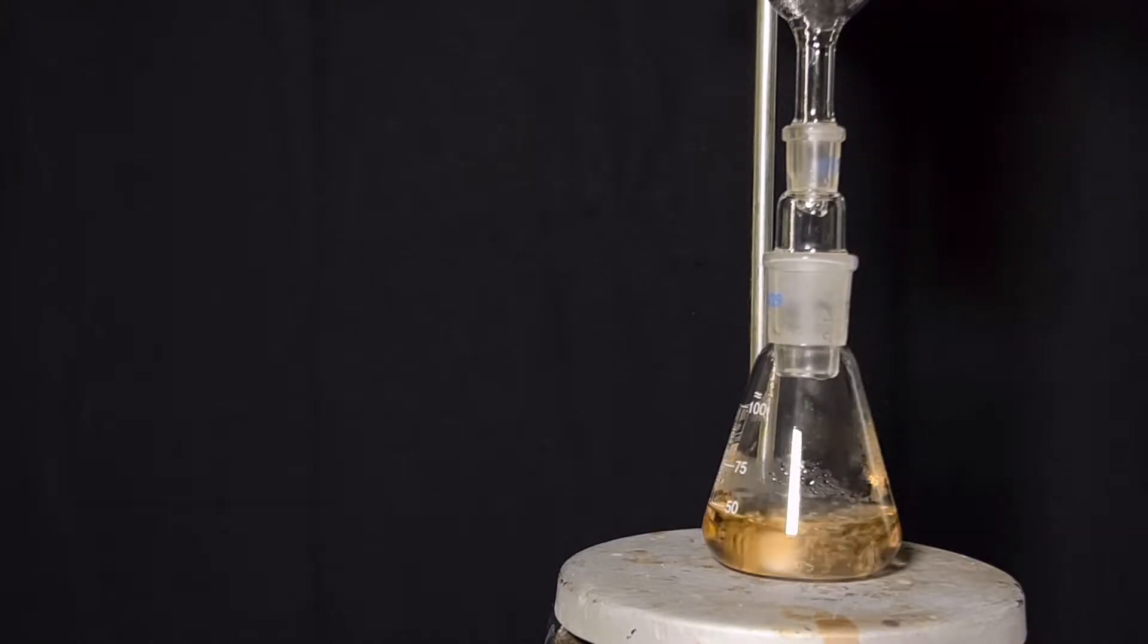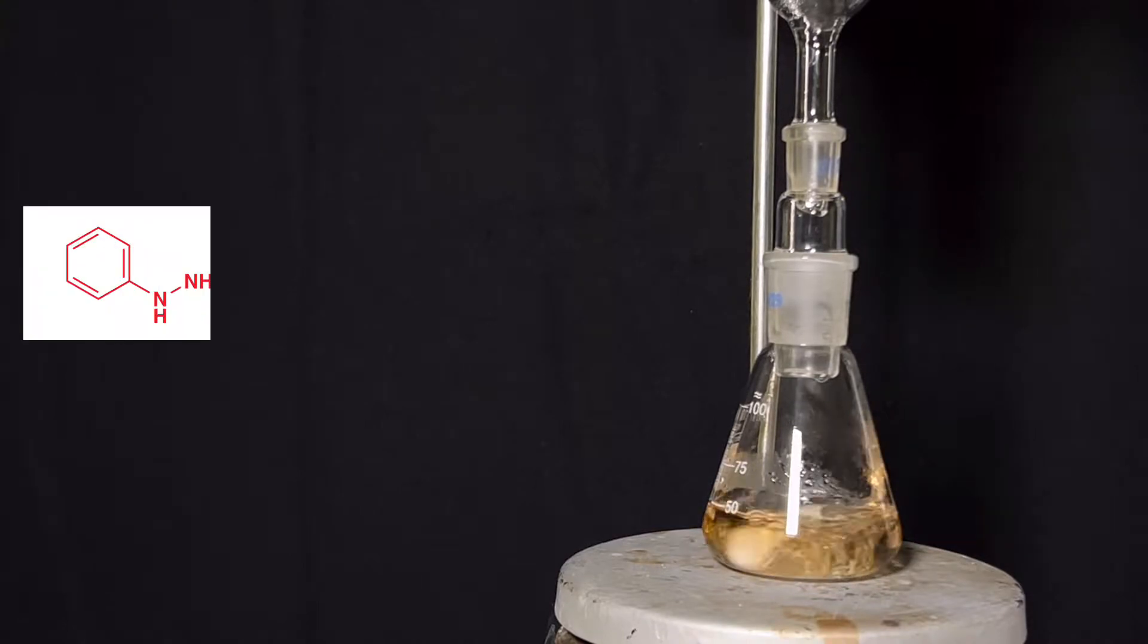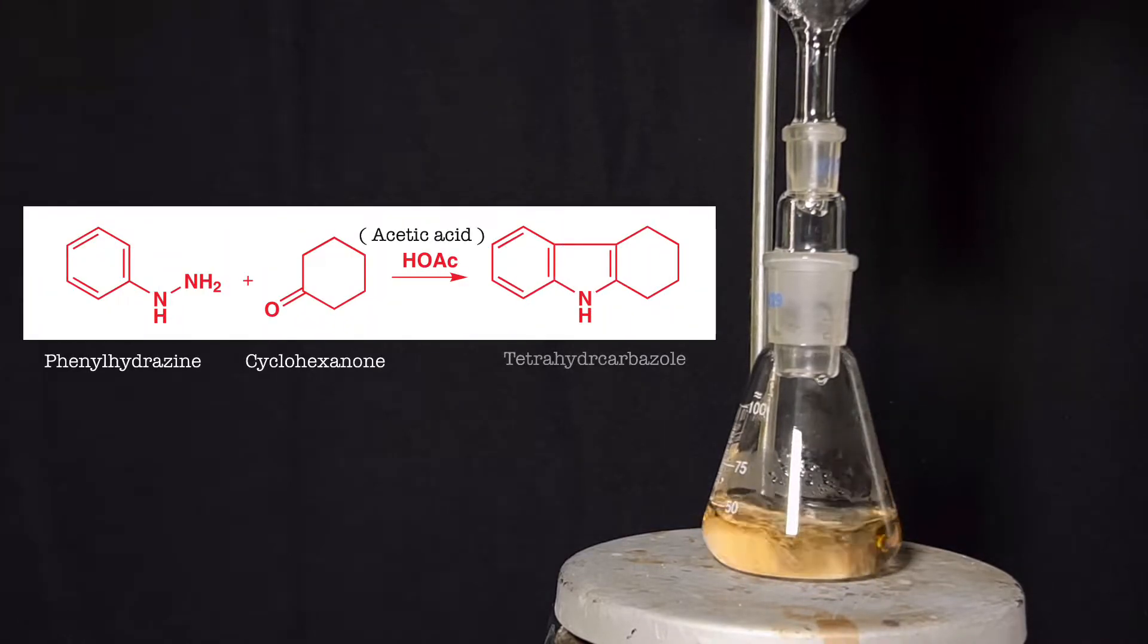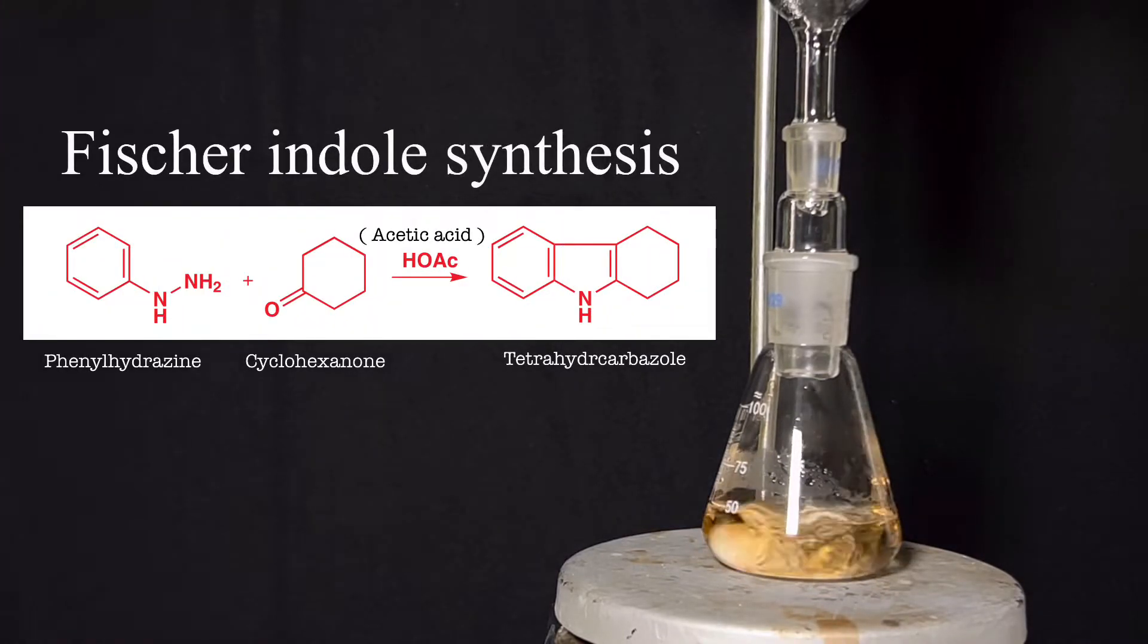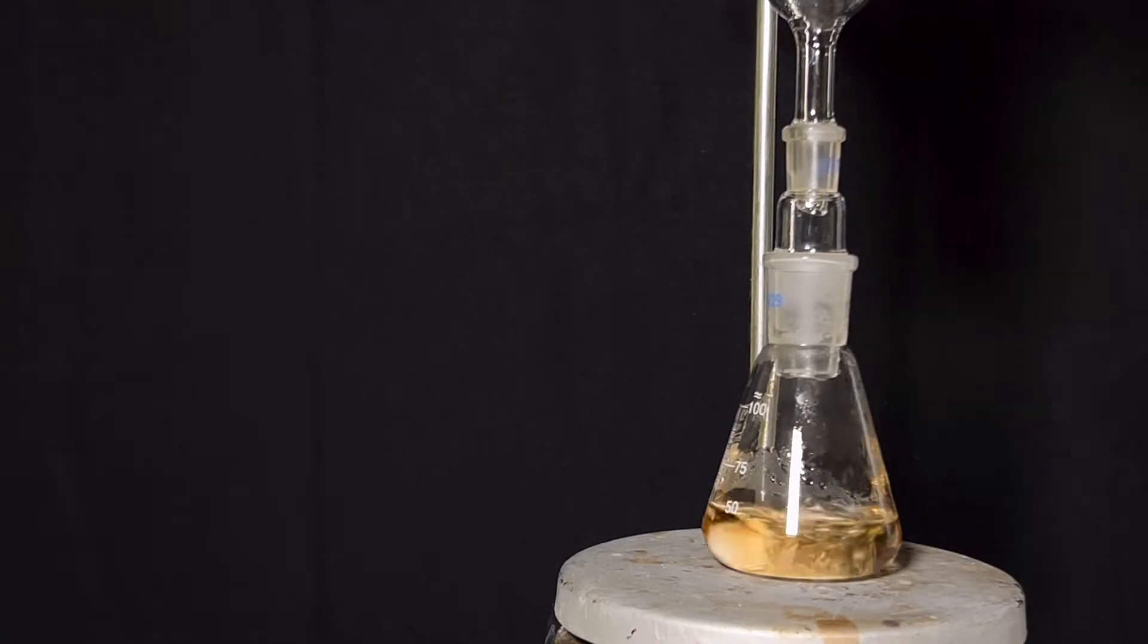Let us see the chemical reaction that is taking place. The reaction that is taking place is an example of Fischer indolization. In this type of reaction, tetrahydrocarbazoles are synthesized by the acid-catalyzed cyclization of cyclohexanone and arylhydrazine. The reaction proceeds through the following mechanism.